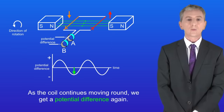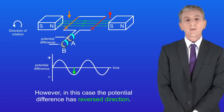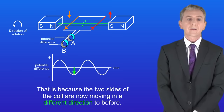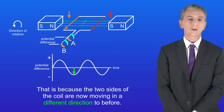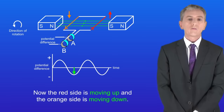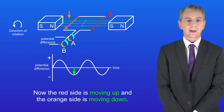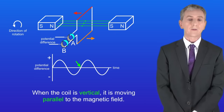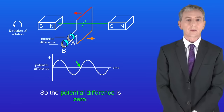As the coil continues moving round we get a potential difference again. However, in this case the potential difference has reversed direction, because the two sides of the coil are now moving in a different direction to before — the red side is moving up and the orange side is moving down. And once again when the coil is vertical it's moving parallel to the magnetic field, so the potential difference is zero.